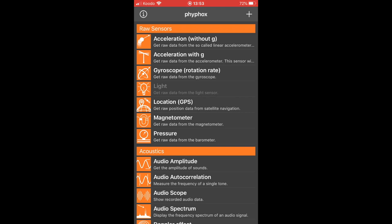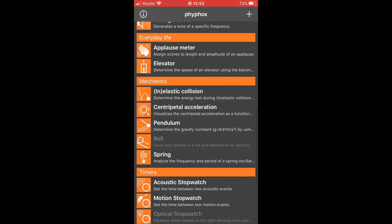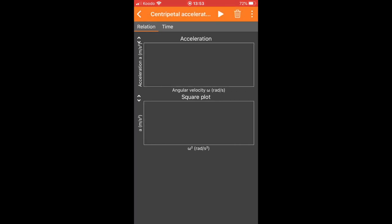In the third part of the lab, you will use the centripetal acceleration experiment, which is located in the mechanics section of the Firefox app. Select the centripetal acceleration, and using the default window, go ahead and start collecting data. You will go ahead and collect data by holding your phone vertically at arm's length and rotating around at different rotation rates.